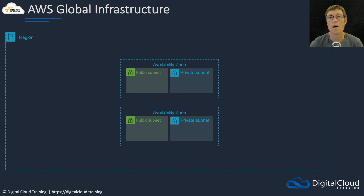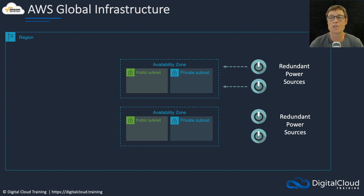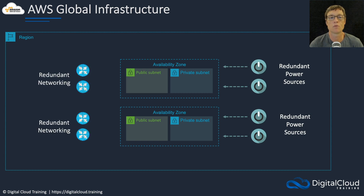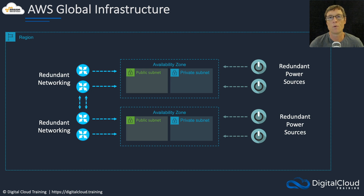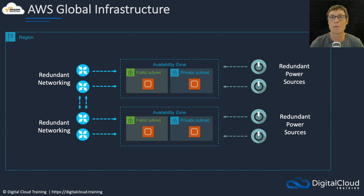Availability zones are composed of one or more data centers, and each of those data centers will have redundant power sources. You also have redundant networking within each of the data centers — so there's lots of redundancy for power, cooling, networking, and all of the resources on which the cloud services depend. You can then deploy your resources across subnets and availability zones and get lots of high availability for your applications.